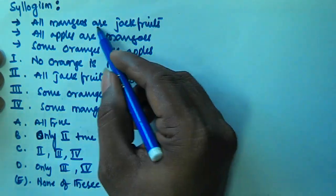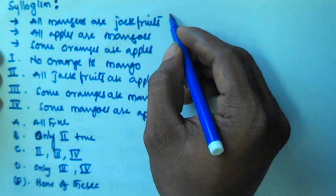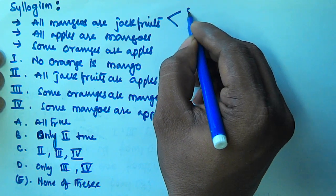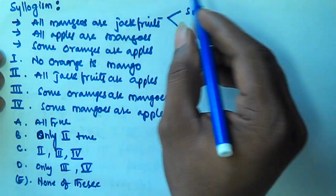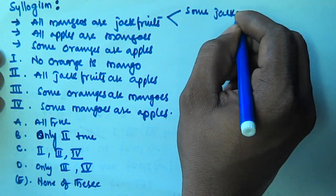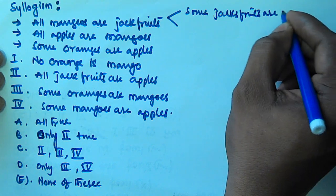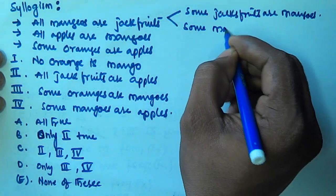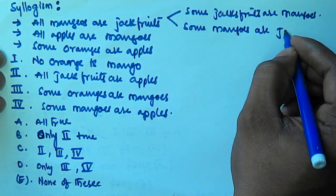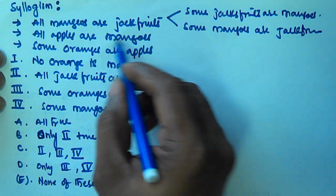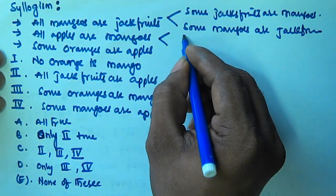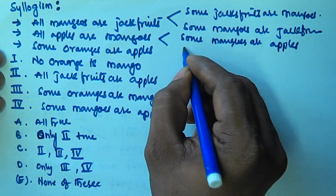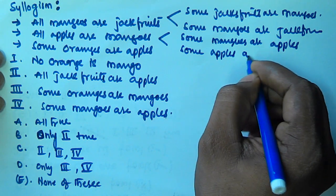From 'all mangoes are jackfruits' we can derive two statements: some mangoes are jackfruits, and by interchanging, some jackfruits are mangoes. From 'all apples are mangoes' we also derive two: some mangoes are apples, and by interchanging, some apples are mangoes.